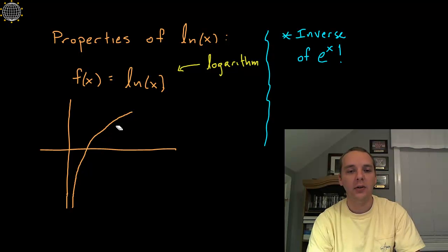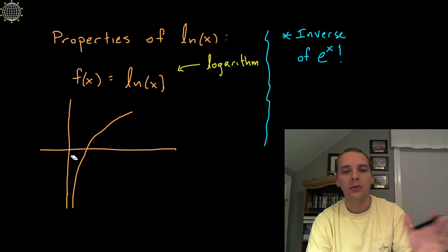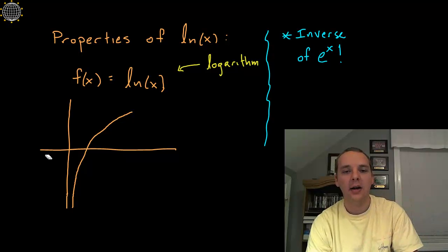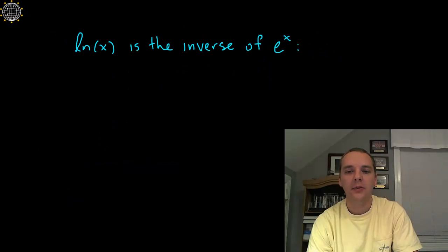His graph looks very standard, and we'll actually write down like his intercepts and that sort of stuff in just a little bit. The y-axis is a vertical asymptote, so he's only defined for the x's past the y-axis; he's not actually defined back here.